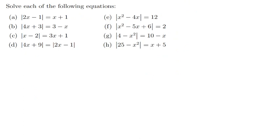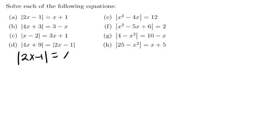I have some questions here. The question says: solve each of the following equations. We have the Modulus of 2x minus 1 equals x plus 1. Remember, anything in the Modulus will come out as positive. Meaning that when you find the answer, you need to plug in the value — especially where there is no Modulus — to check it gives a positive result. If it gives negative outside the Modulus, then that answer is not valid.